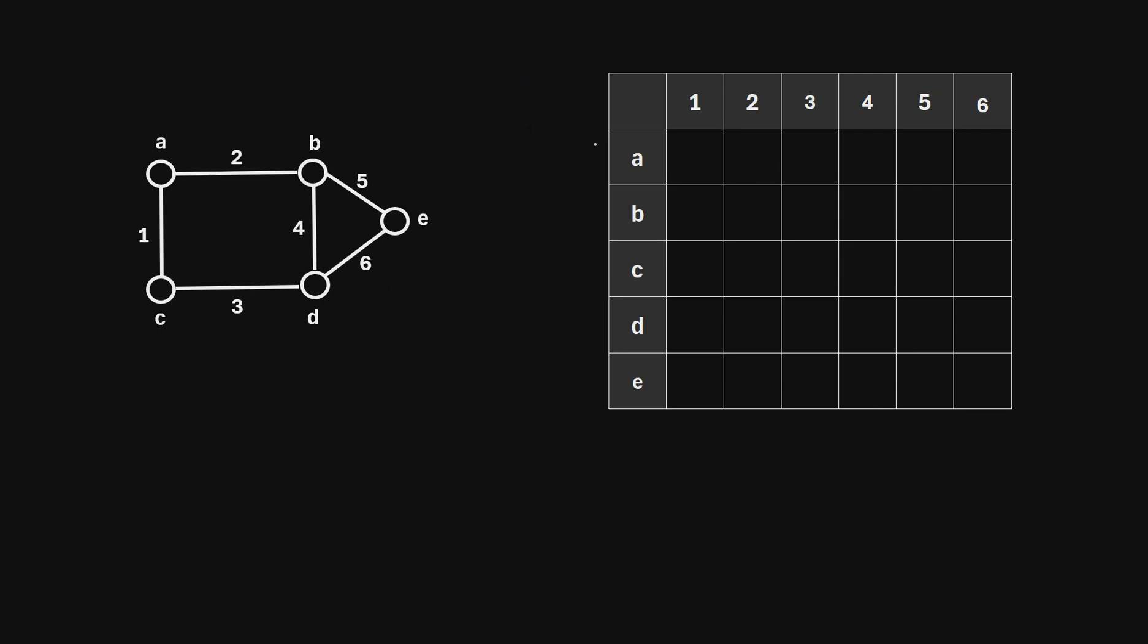So to create this type of matrix, we can write the names of the vertices along the rows right here, and then we can write the names of the edges in the graph along the columns.